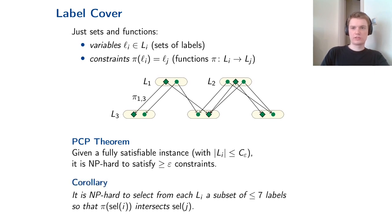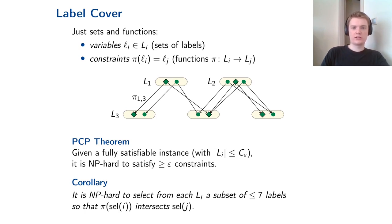A combinatorial corollary: given a fully satisfiable instance, it is NP-hard to select from each label set a subset of at most 7 labels so that what you select for i intersects what you select for j after applying the function π. The reason is that if you could select such subsets, you could pick one label at random and every constraint would be satisfied with probability at least 1/49 — satisfying a constant fraction of constraints, which is NP-hard by the PCP theorem.